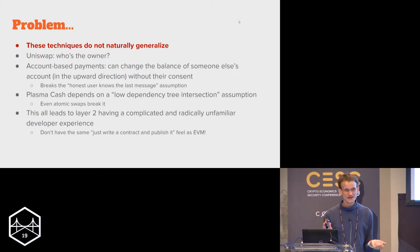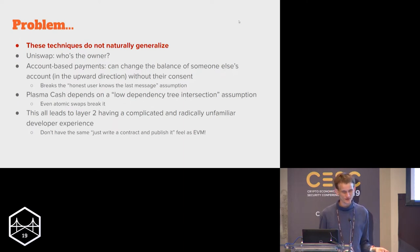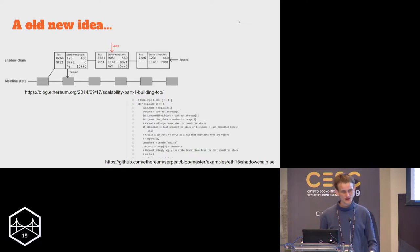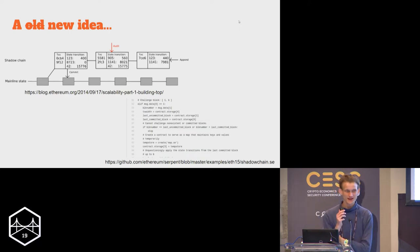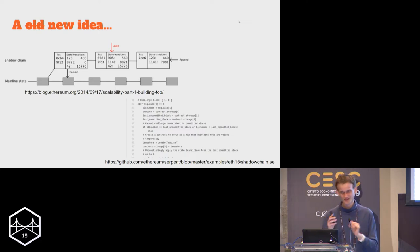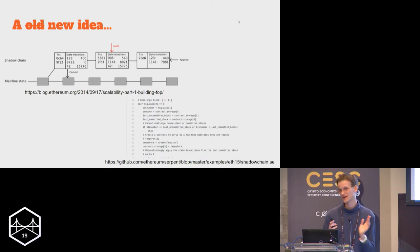All of this leads to layer two just not lending itself well to generalization, and in many cases having a complicated and radically unfamiliar developer experience. You don't have a crypto-economically secure layer two thing that has the same user experience of just 'write a contract and publish it' that you can do inside the EVM. So let's talk about rollups.